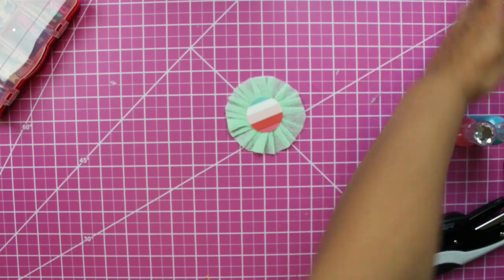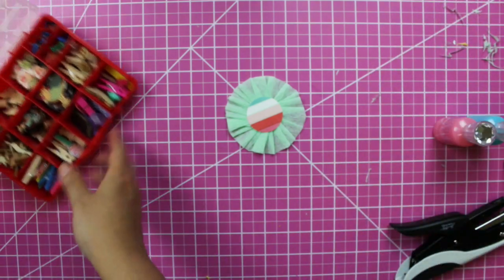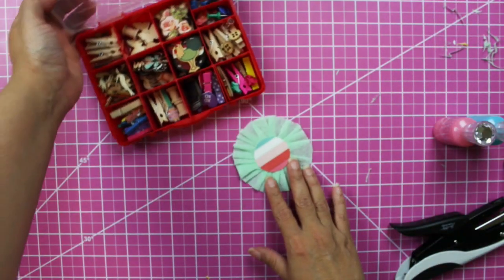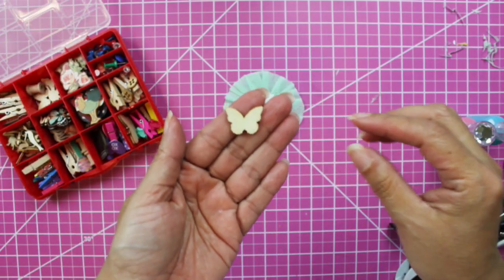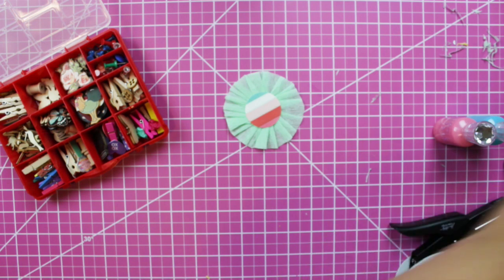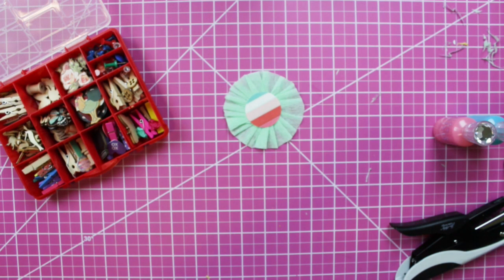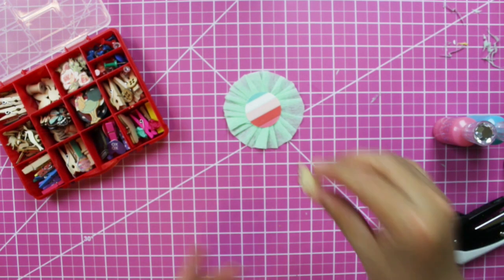So I can use this side or this side. I think I like the colorful side better. So now to embellish the rosette, it's very easy. We're gonna pick one of these wooden chipboards, and I'm gonna pick the butterfly because I love butterflies.